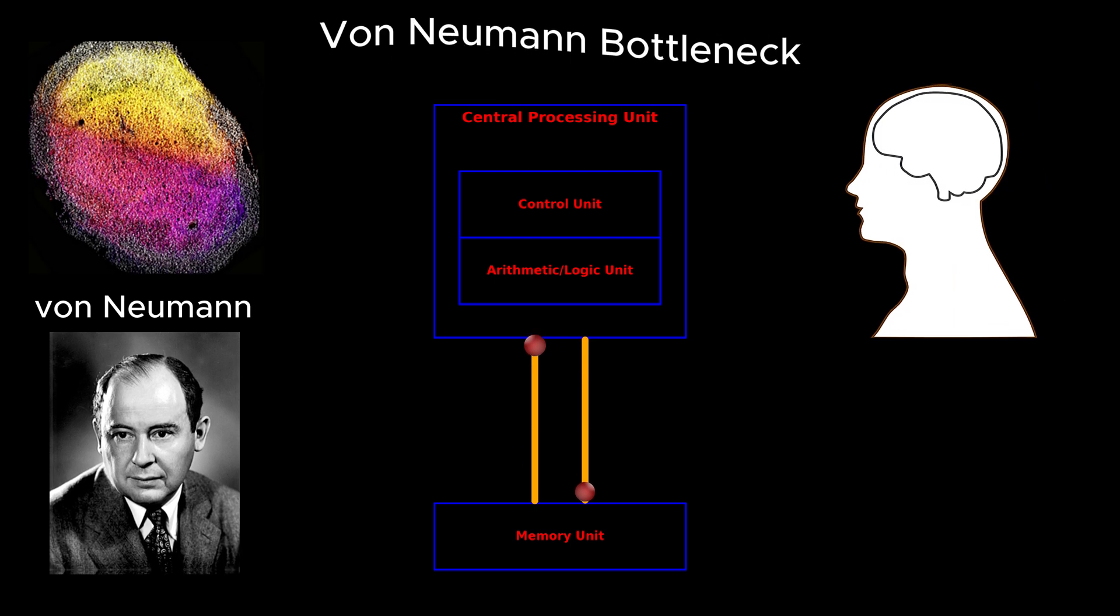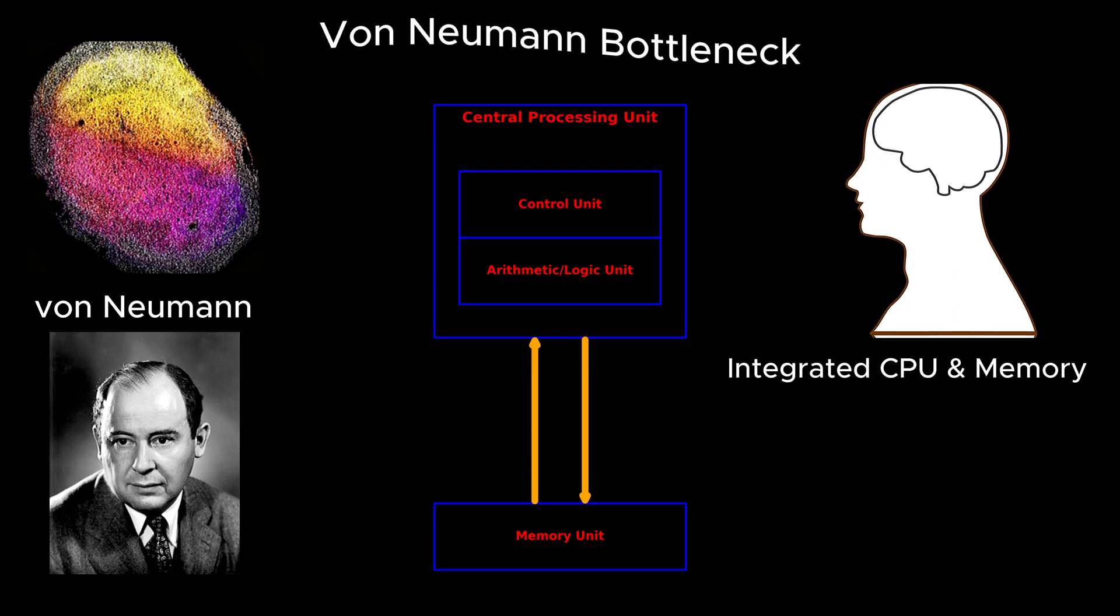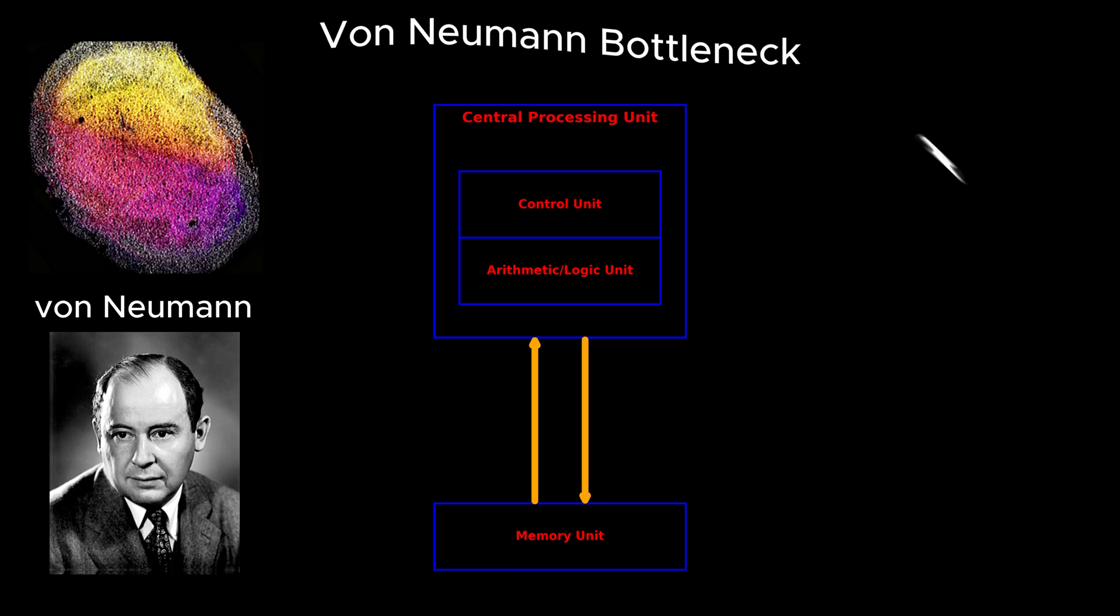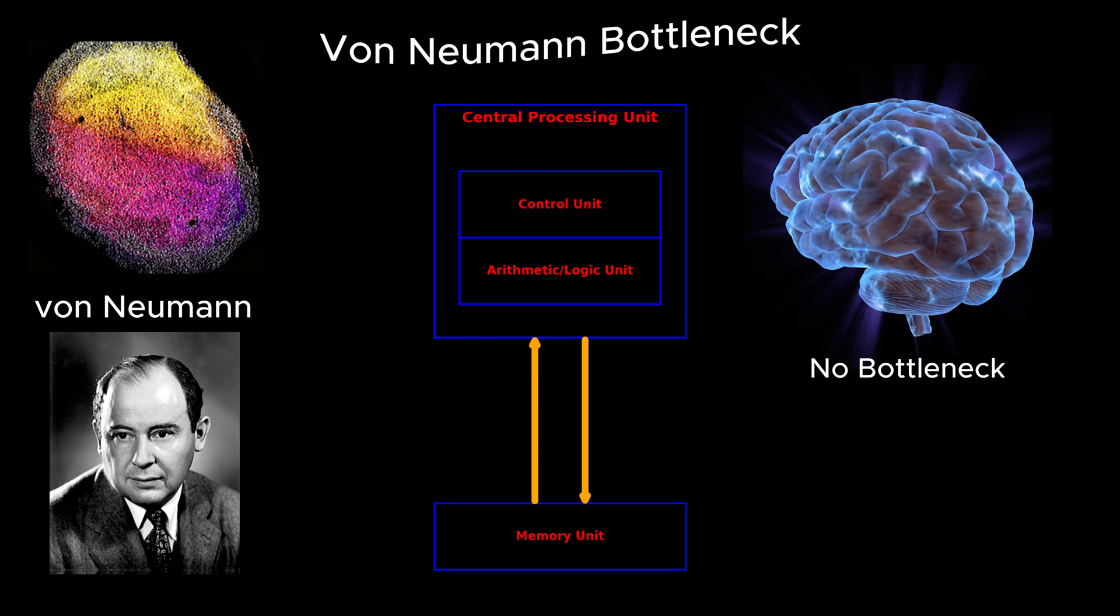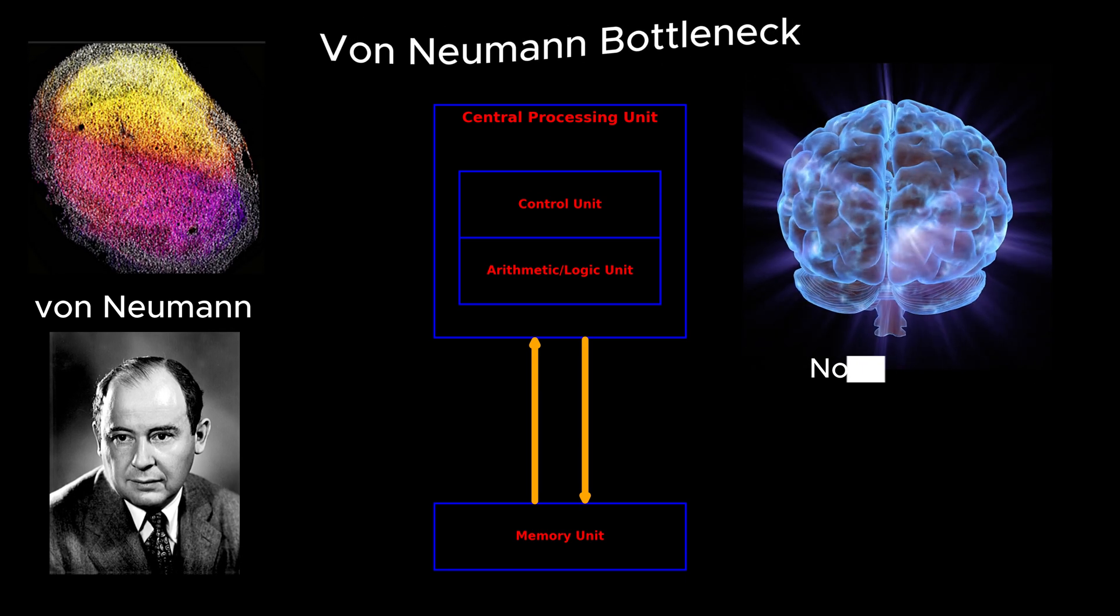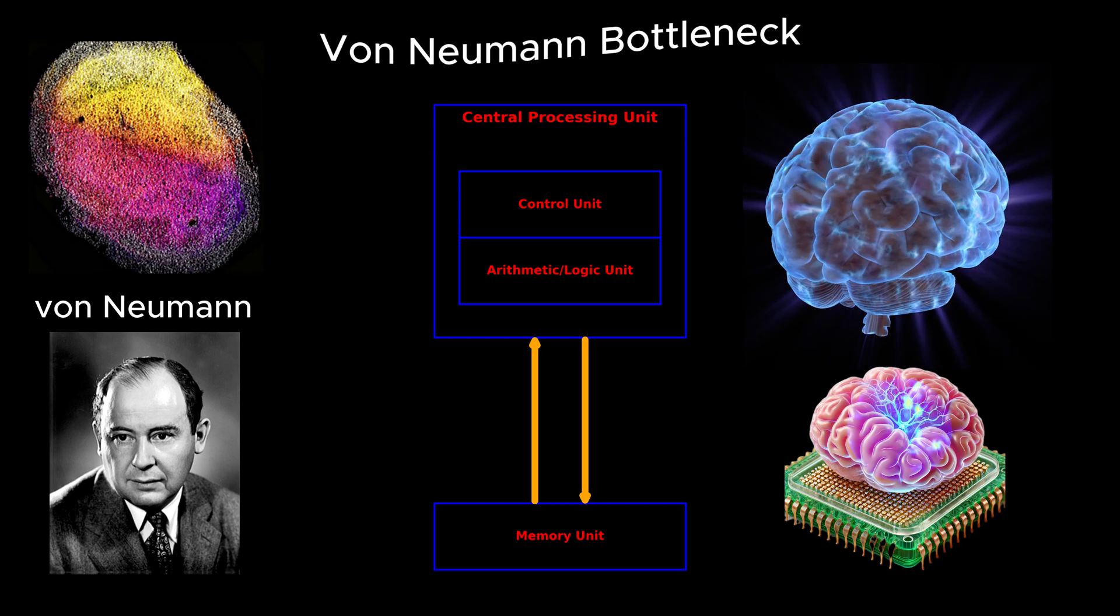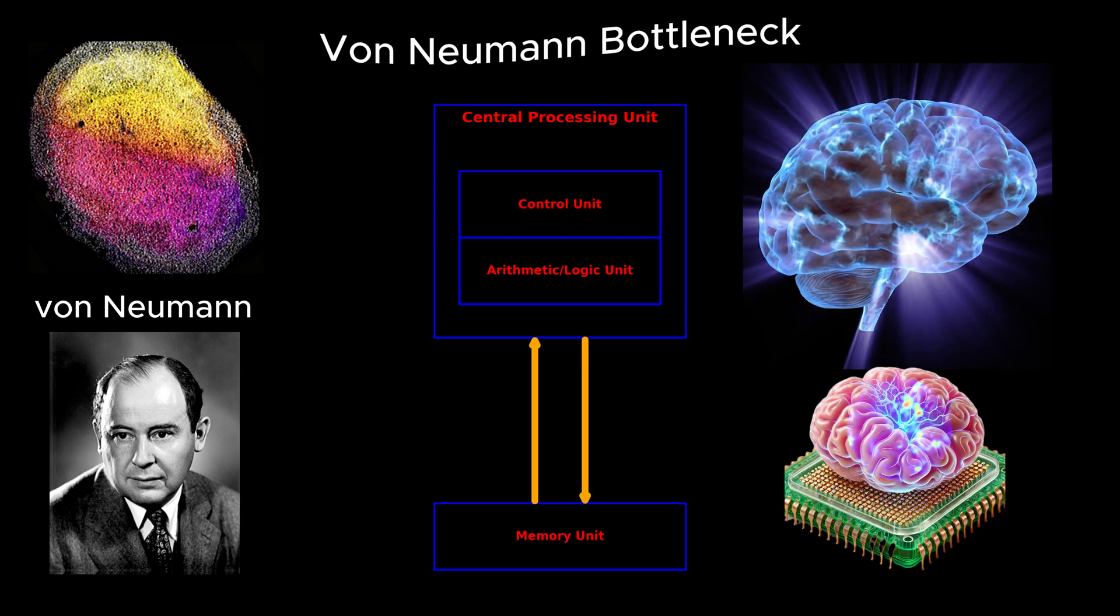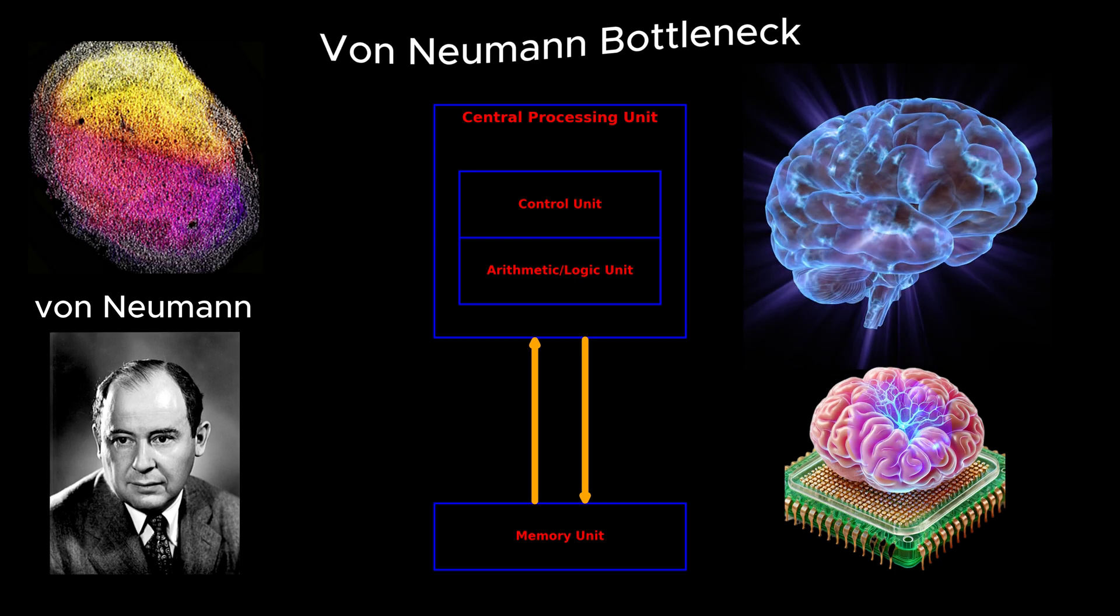This bottleneck contrasts sharply with the human brain, where data storage and processing units are seamlessly integrated. Our brain's neurons both store information and process it within the same structure, enabling unparalleled efficiency. And this is precisely where brain organoids come into play, offering a way to mimic the brain's architecture and bypass the limitations of traditional hardware.